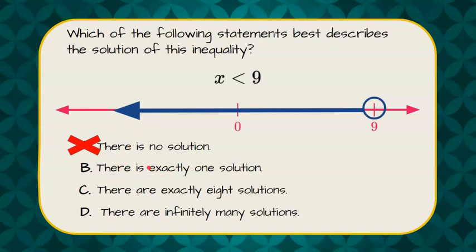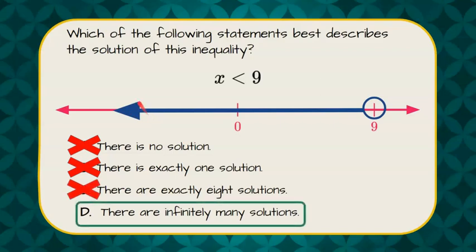We have several, an infinite amount. There are exactly eight solutions. That is incorrect. There are an infinite amount of solutions. Choice D.